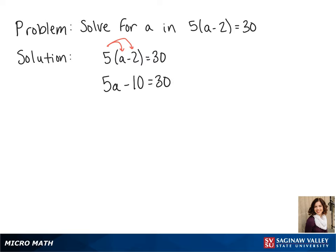We add 10 to both sides and we get 5a equals 40. To get a by itself we divide both sides by 5 and we get a equals 8.